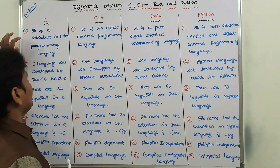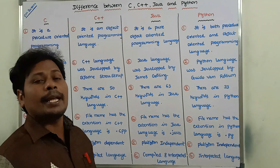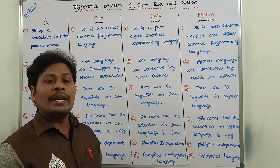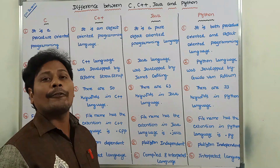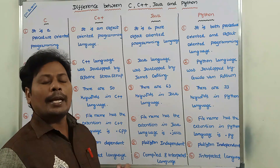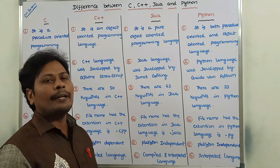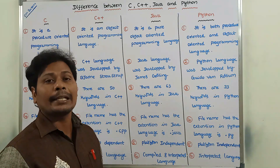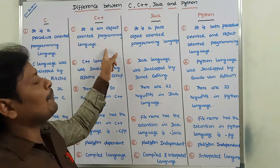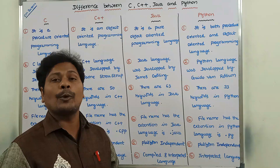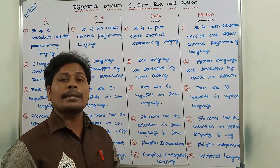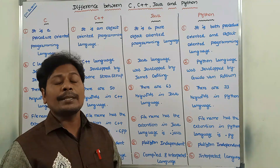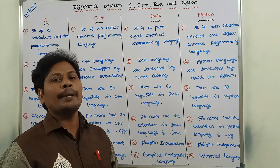First point: C language is a procedure oriented programming language — that means every C program can be viewed as a set of procedures or functions. A procedure does not return any value, but a function can return a value. C++ is an object oriented programming language. Java is a pure object oriented programming language. And Python is both a procedure oriented and object oriented programming language.